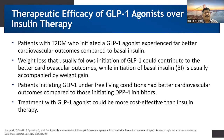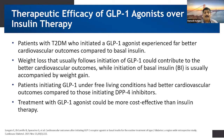Patients with Type 2 diabetes mellitus who initiated a GLP-1 agonist experienced far better cardiovascular outcomes compared to basal insulin. Weight loss that usually follows initiation of GLP-1 could contribute to better cardiovascular outcomes, while initiating basal insulin is usually accompanied by weight gain. Patients initiating GLP-1 under free-living conditions were found to have better cardiovascular outcomes compared to those initiated with DPP-4 inhibitors. Treatment with GLP-1 agonists is also cost-effective compared to insulin therapy.